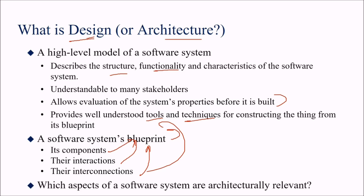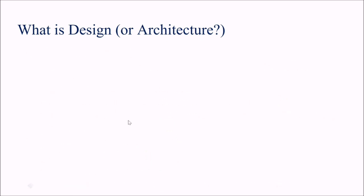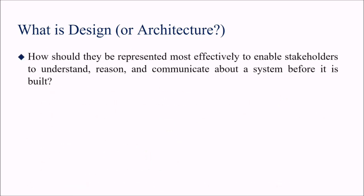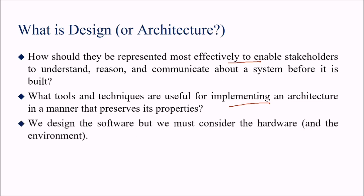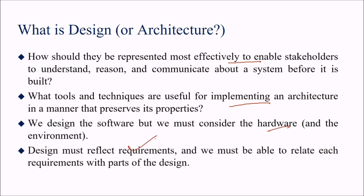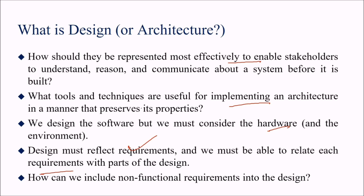Which aspects of a software system are architecturally relevant? These are the components and their interactions — the abstractions. They should be represented effectively to enable stakeholders to understand, reason, ask questions, and communicate about the system before it is built. We must also consider hardware and environment. Design must reflect requirements: each requirement must be traceable to part of the design, including non-functional requirements.